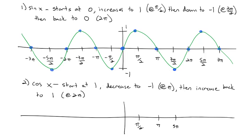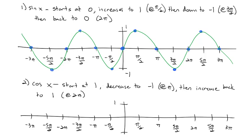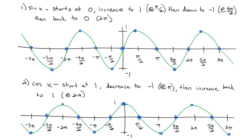Let's look at the graph of cosine of x. We label pi over 2, pi, 3 pi over 2, 2 pi, 5 pi over 2, and 3 pi on the right, and the corresponding negatives on the left. The graph starts up at 1, because cosine of 0 is 1, and then every pi over 2 hits 0, negative 1, 0, 1, continuing in both directions. It has the same curvy shape — just staggered from the sine by a distance of pi over 2. These are our graphs of sine x and cosine x.